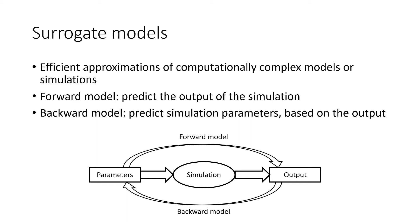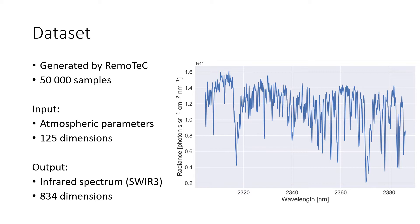The dataset we use was constructed specifically for this purpose. It was generated using RemoTeC and is composed of 50,000 samples. The input dimensions contain the atmospheric parameters such as albedo, optical depth and the profiles of temperature, pressure and various gas concentrations. In total, there are 122 numeric attributes.